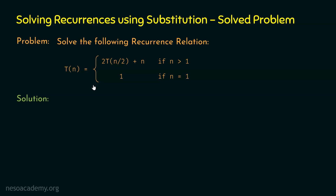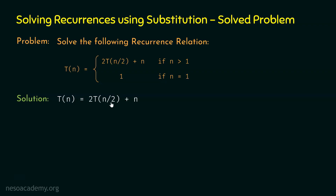We start from the recursive case: T(n) = 2T(n/2) + n. To apply the substitution method, let's substitute T(n/2) by 2T(n/4) + n/2. Why? Because we can replace n by n/2 in the recurrence, giving T(n/2) on the left-hand side, and 2T(n/4) + n/2 on the right-hand side.